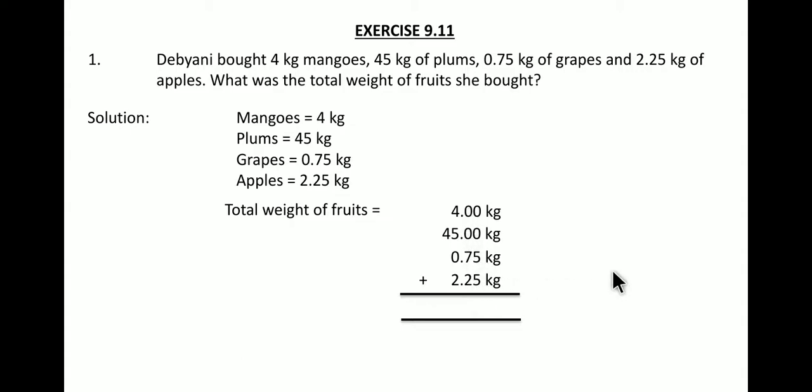So now when you add this you will get the answer as 52.00 kg. I am not showing how to add because we have already learned how to add the units in this way. So the total weight of fruits is equal to 52 kg and that is the answer.